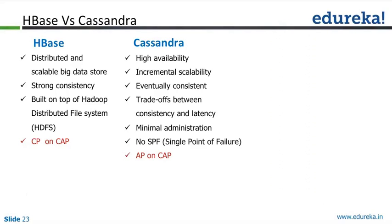Comparing the systems: HBase is a distributed, scalable big data store with strong consistency, built on top of Hadoop Distributed File System. Use HBase for MapReduce applications with strong consistency requirements, like Facebook Messenger. Coming to Cassandra — incremental scalability, eventually consistent model, more suited for time series applications like travel portals, feeds, and similar use cases.